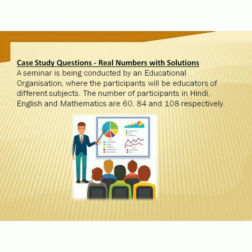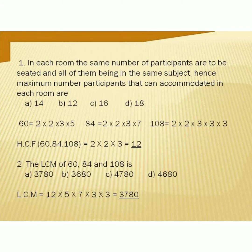Next, we will discuss a case study question from the same topic. A seminar is being conducted by an educational organization where the participants will be educators of different subjects. The number of participants in Hindi, English, and Mathematics are 60, 84, and 108 respectively. Question 1: In each room, the same number of participants are to be seated, all being of the same subject. The maximum number of participants that can be accommodated in each room means we have to find the HCF of 60, 84, and 108. The answer is 12. Option B.